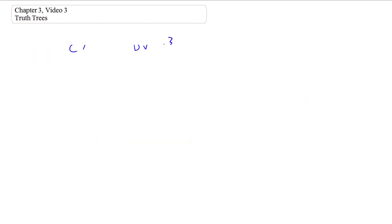First, a simple illustration. Consider a set containing just two formulas. Is it consistent? Some of you might be able to tell the answer just by looking at it, but we'll use this simple case to demonstrate the basic method. In order to test whether it's consistent or not, we try to find a truth value assignment that makes all its members true.